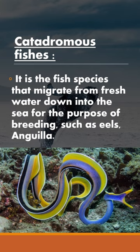First of all, catadromous fishes. Catadromous fishes are the ones who live in normal conditions in fresh water and during the breeding season they migrate to the sea.